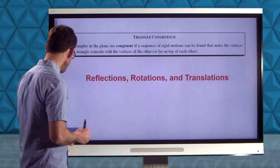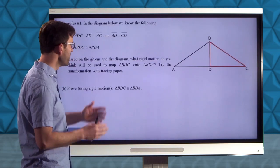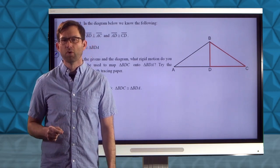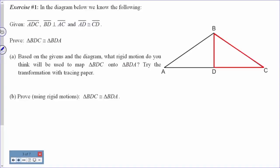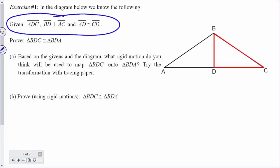Let's take a look at our first rigid body motion proof that two triangles are congruent. In the diagram below we know the following givens: ADC, BD perpendicular to AC, and AD congruent to CD. We need to prove that triangle BDC is congruent to triangle BDA. Based on these givens, we're able to prove that those two triangles have the same shape and the same size.